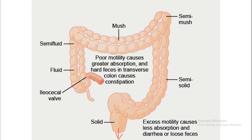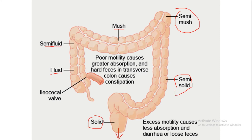The changes occurring in the contents along the large intestine: food entering the cecum and proximal ascending colon is fluid in nature. It becomes semi-fluid in the transverse colon, semi-mass at the end of the transverse colon, semi-solid in the descending colon, and solid inside the rectum.